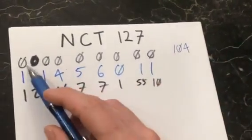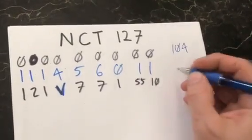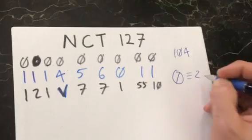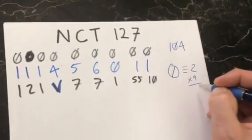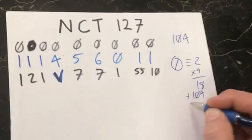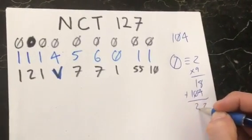Now we have 1, 2, 3, 4, 5, 6, 7, 8, 9 zeros. And if a zero is the unison between a zero and a one, which is the equivalent of a two, two times nine is 18. 18 plus 104 would be 122.